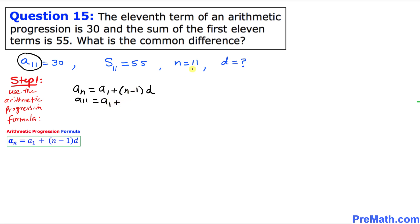And we know N is 11. So I can write 11 minus 1 times D. We don't know D as well. And we know that A of 11 is 30. So I can replace this A of 11 by 30 equals A of 1 plus 10D. This is equation number 1.